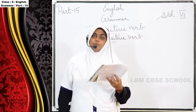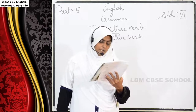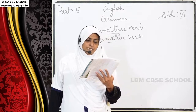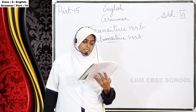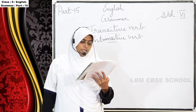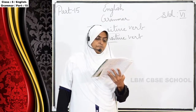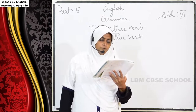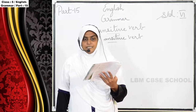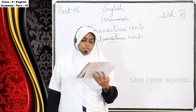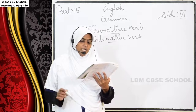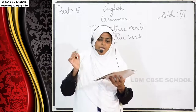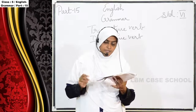Underline — page number 45. Underline the verbs in the following sentences and state whether they are transitive or intransitive. Circle the objects if the verbs are transitive. So here we have to say whether it is a transitive verb or intransitive verb.